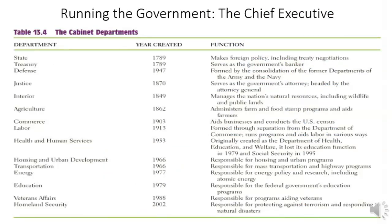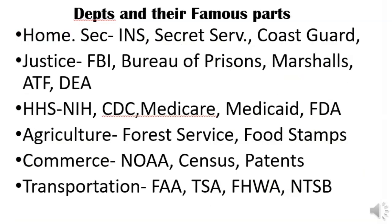For the Department of Homeland Security, you have the INS — Immigration and Naturalization Service — which is basically in charge of customs and border security. You also have the Secret Service and the Coast Guard. Under the Justice Department, the FBI, the Bureau of Prisons, the ATF, and the DEA are all under the Justice Department.